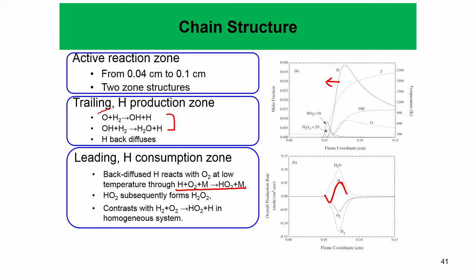This back-diffusion process is very critical — once H back-diffuses, it can react with oxygen to form HO₂ + M, and this reaction is extremely exothermic. As a result, you have a lot of heat release in the low-temperature upstream regions, which is not possible in a normal hydrogen-oxygen homogeneous system. This is because in a homogeneous system the initiation reaction — formation of H — is through H₂ + O₂ → HO₂ + H. That is the contrast between a flame structure and a homogeneous structure.